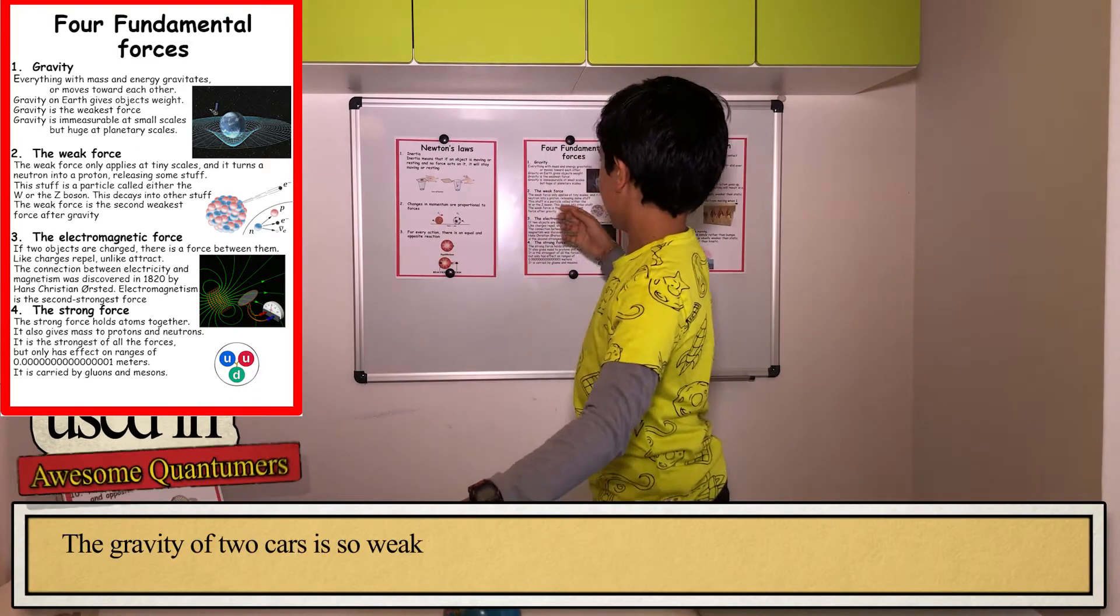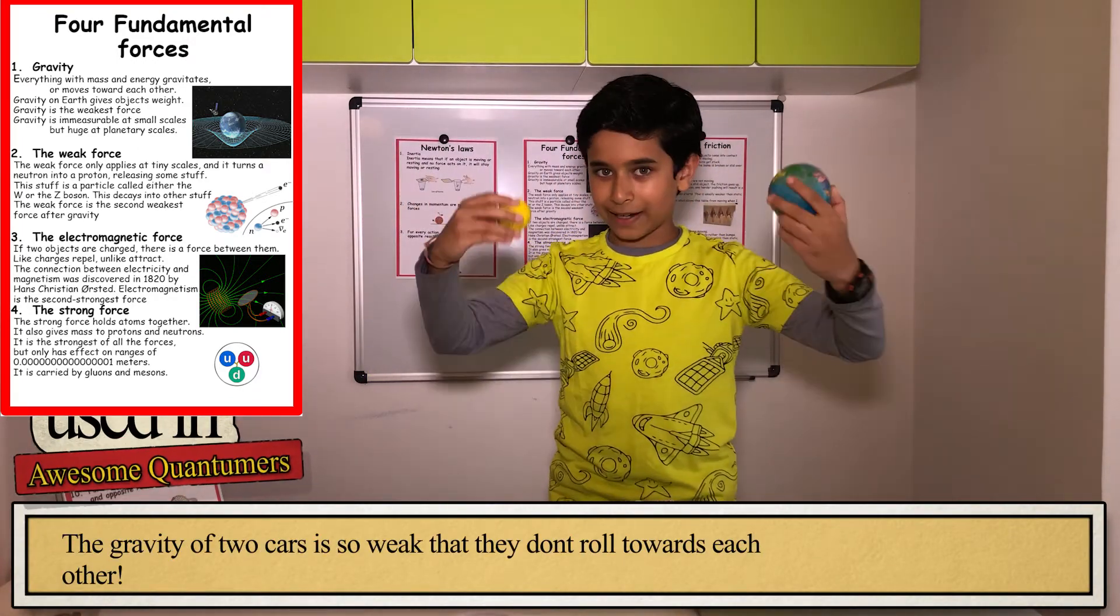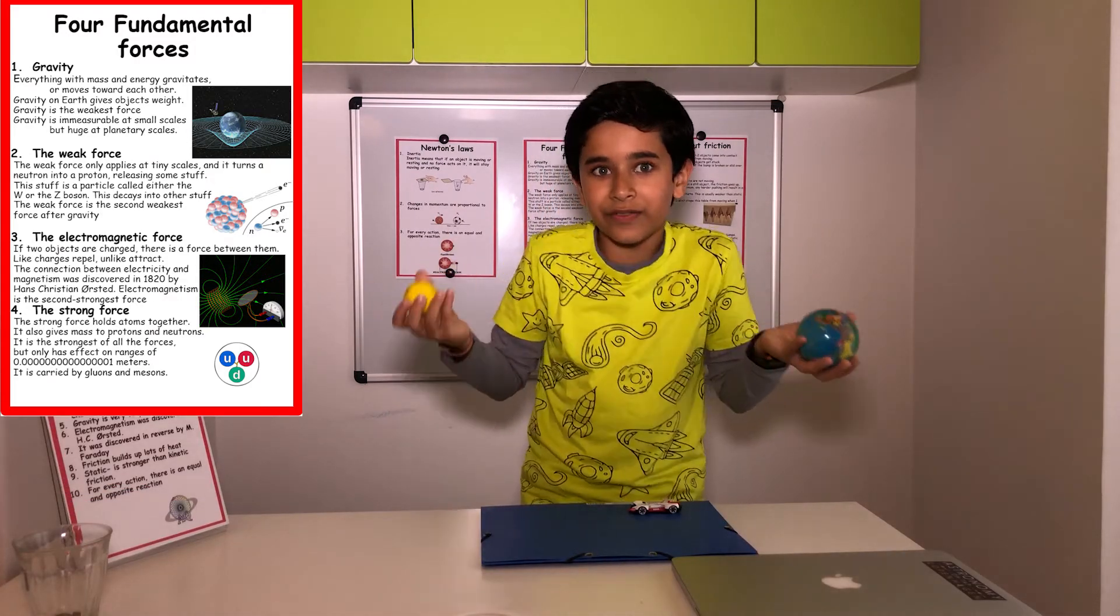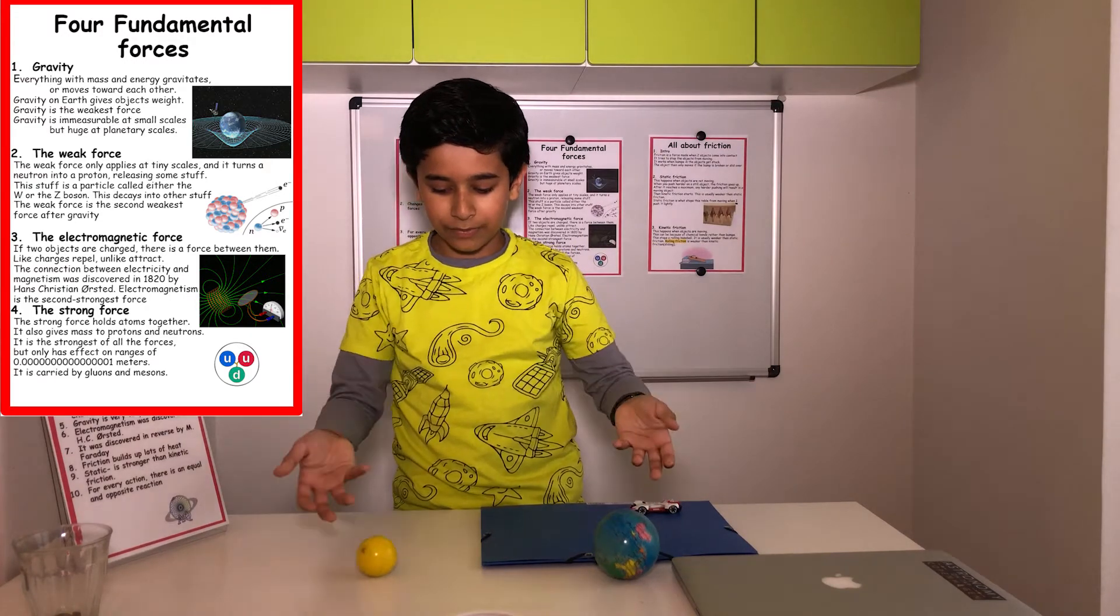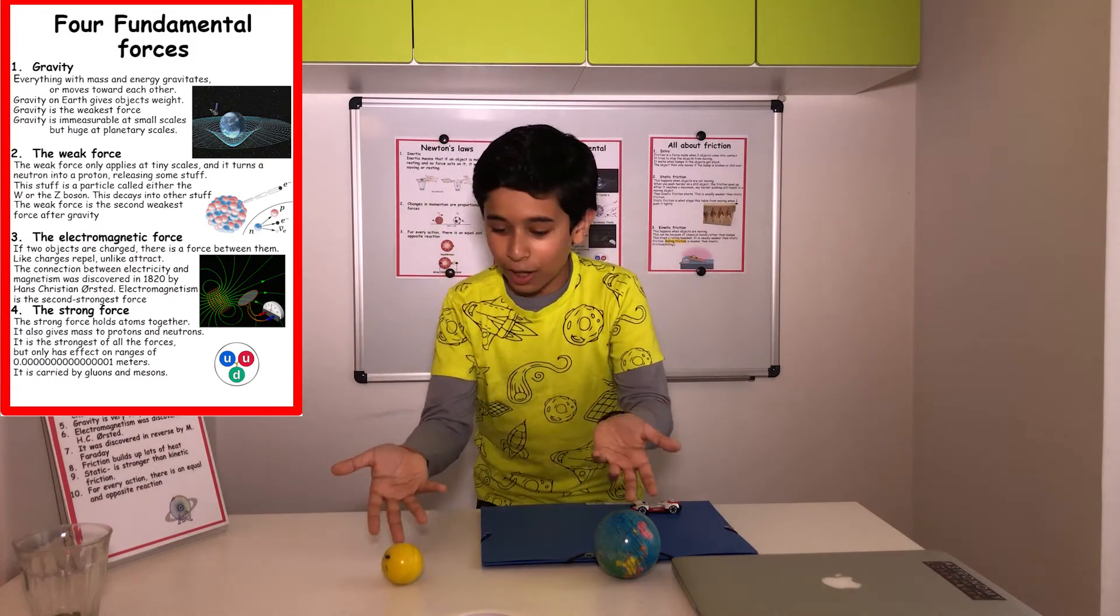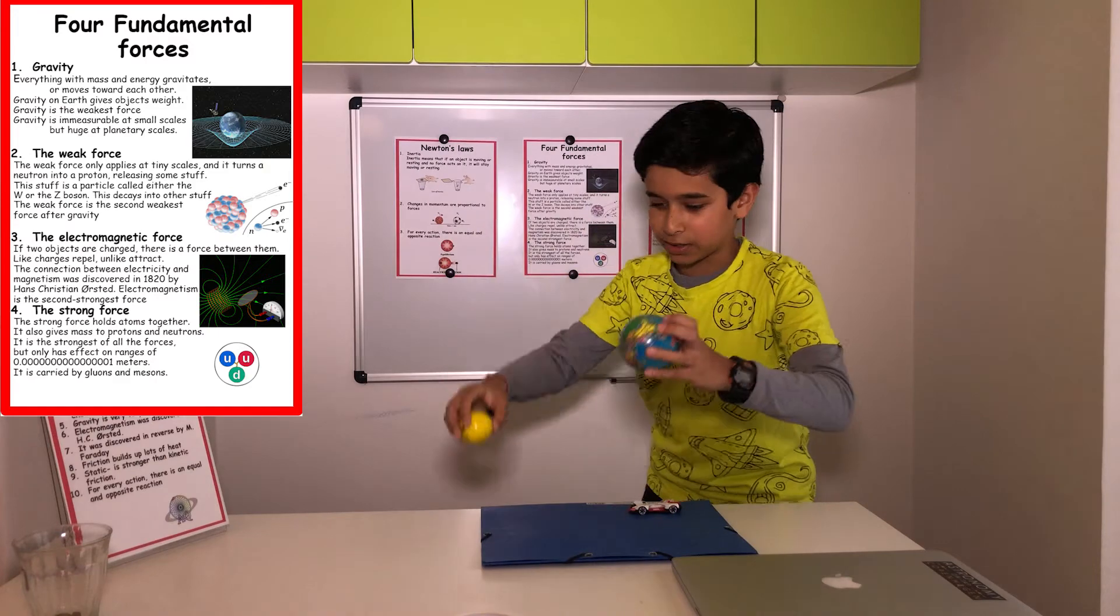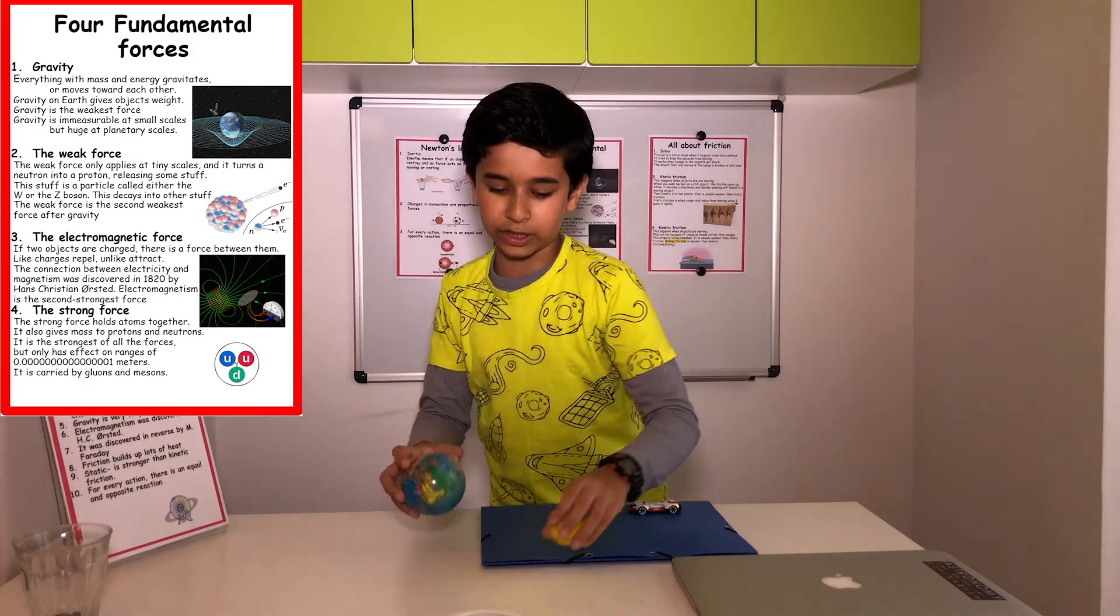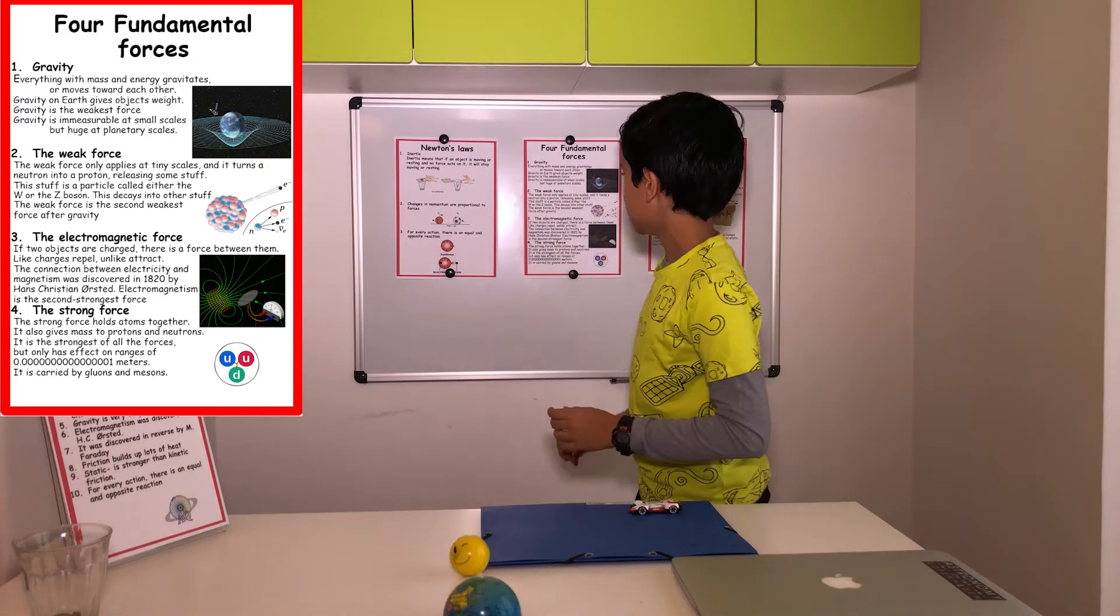Gravity is a very weak force. It's so weak that if I have two objects, both of these are relatively heavy. When I put them here, they're not moving towards each other. But, the gravity of the Earth, you can kind of see for yourself. The gravity of the Earth is pulling it down. That's because the Earth is so huge.